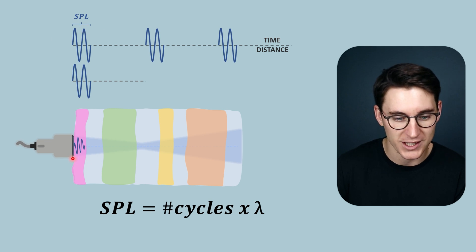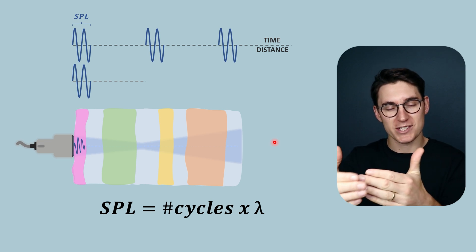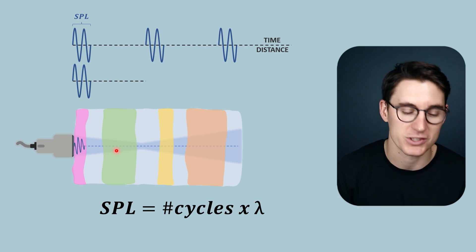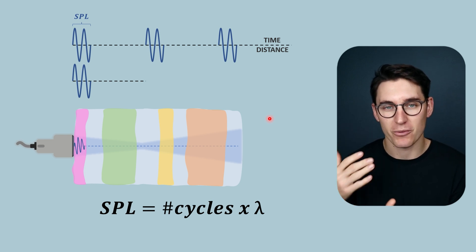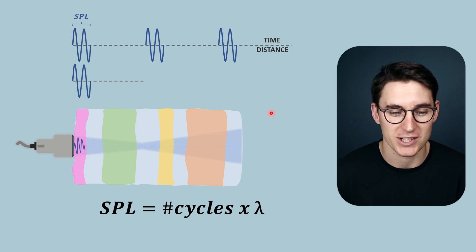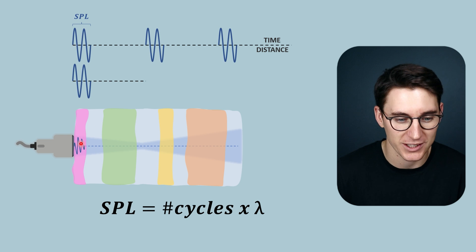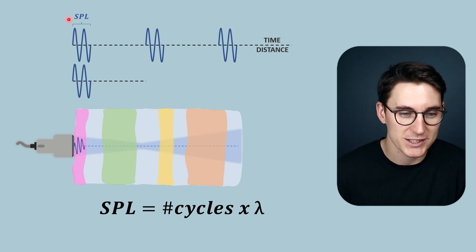The pulse heading into the tissue, as it comes into boundaries of tissues with differing acoustic impedances, will send reflections or echoes back to our ultrasound machine. It's those reflections and echoes that provide us with the data to create the ultrasound image. So it's this spatial pulse length, this pulse, that interacts with the tissues and creates our echoes.